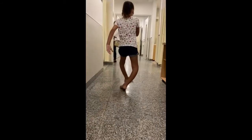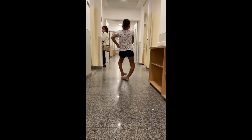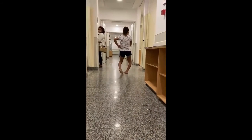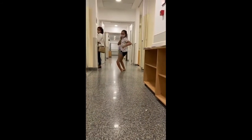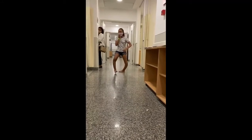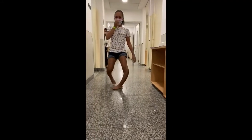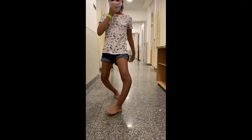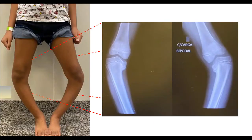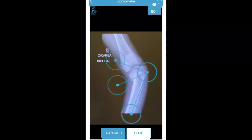We present a patient with neglected severe bilateral Blount disease. Preoperative radiographs show the metaphyseal-epiphyseal angle of approximately 45 degrees to the left and 35 degrees to the right.